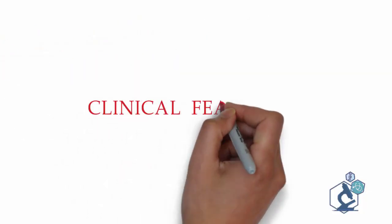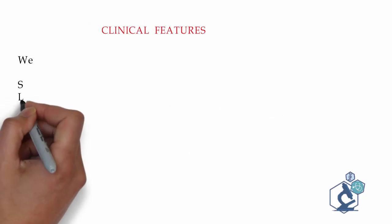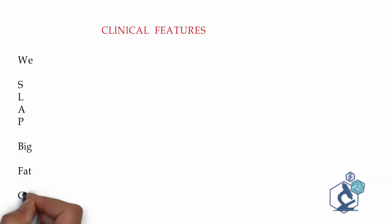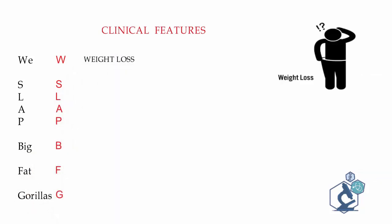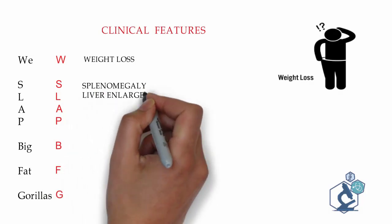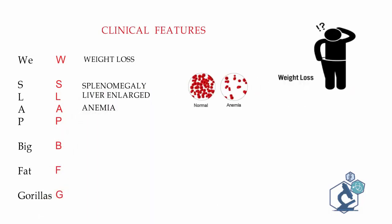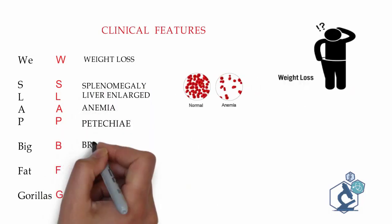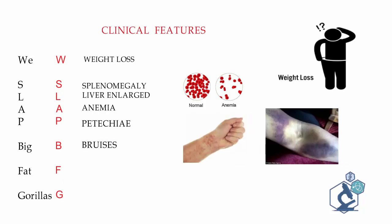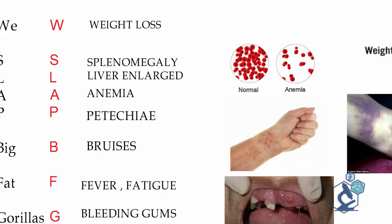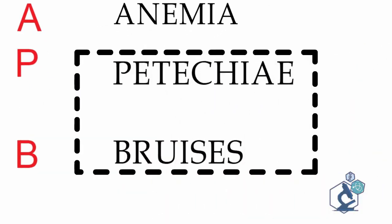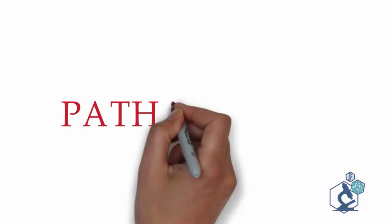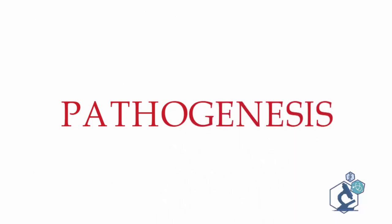Moving on to clinical features, we can remember them by a mnemonic: 'WE SLAP BIG FAT GORILLAS.' W stands for weight loss; S and L for splenomegaly and enlarged liver; A for anemia; P for petechiae; B for bruises; F for fever and fatigue; and G for bleeding gums. Petechiae and bruises are the most common symptoms.